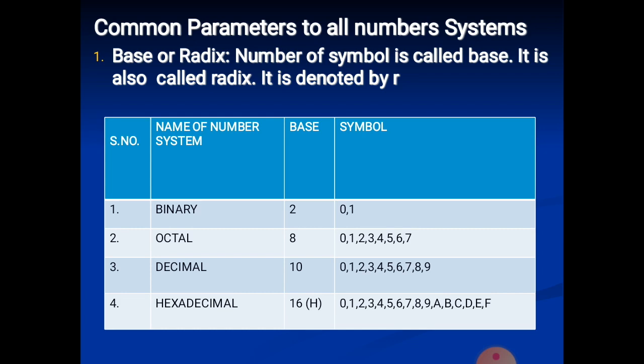For hexadecimal, the number of symbols is 16. From 0 to 9 it is the same as decimal, and after 9 — 10, 11, 12, 13, 14, 15 — we represent these with symbols: A, B, C, D, E, F. A for 10, B for 11, C for 12, D for 13, E for 14, F for 15.